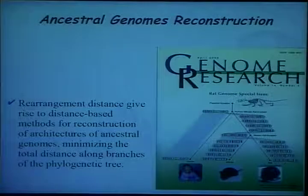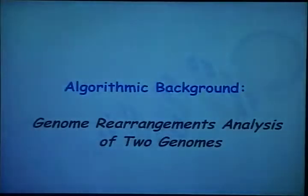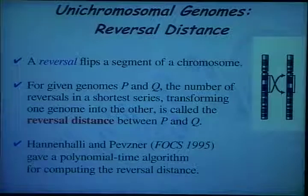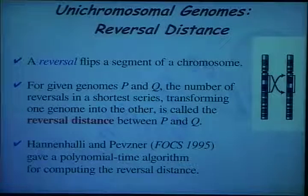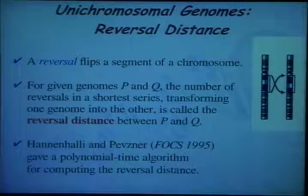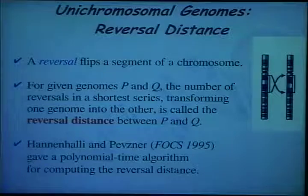Let me remind the background about the analysis of two genomes. If you have two unichromosomal genomes, then the only rare event we have is reversal or inversion. As soon as we have two genomes, we can define reversal distance as the minimal number of operations between two genomes. The first polynomial time algorithm for finding reversal distance was proposed by Hannenhalli and Pevzner in 1995.